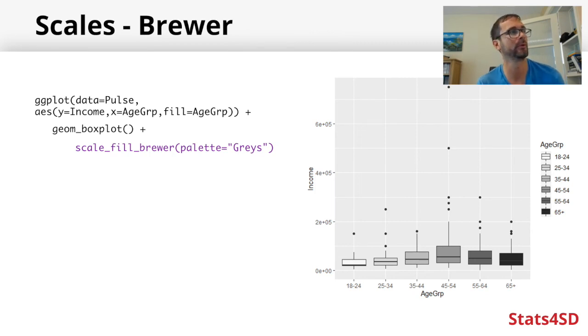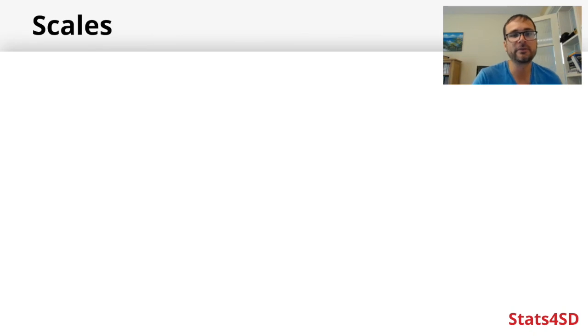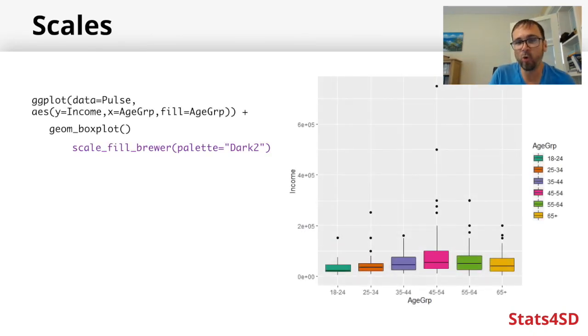Scales don't just work with fill and color - all aesthetics can be modified in a certain way. If we think of our x and y aesthetics, particularly our y aesthetic, our plots look quite nice but there's a lot of blank space in this graph. Income is distributed where a very small number of people have a very large amount and most of us are way down at the bottom, not earning quite so much. Most of the action is going on in the bottom 10% of this plot. We can modify our y-axis to maybe be on a logarithmic scale.